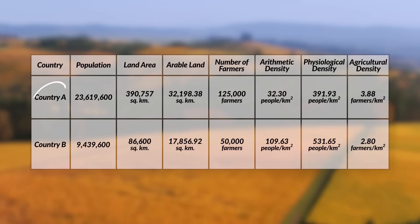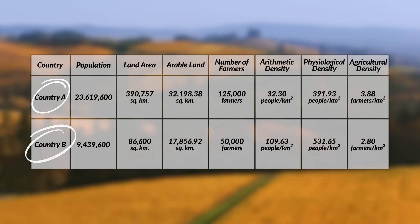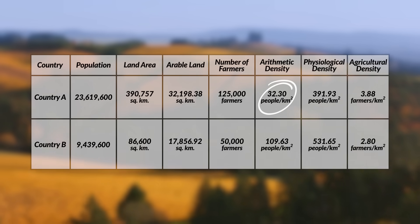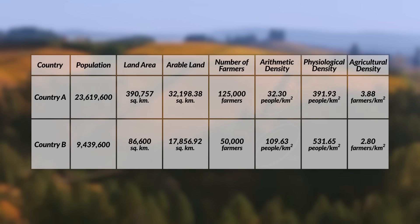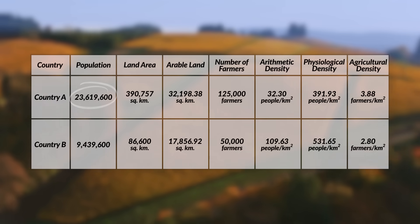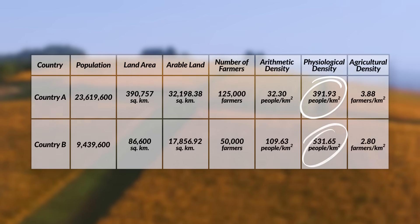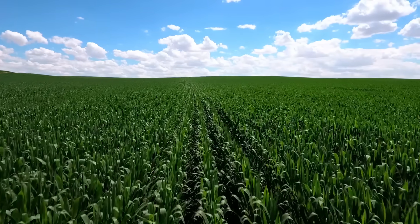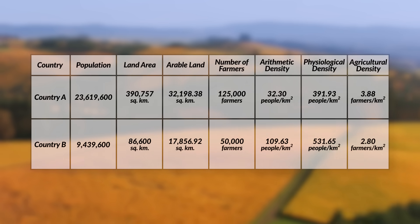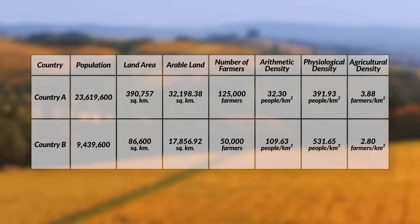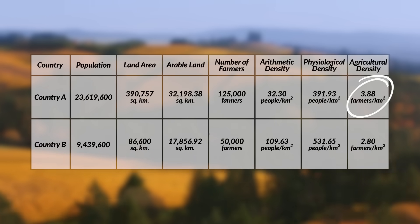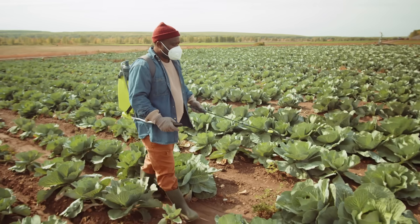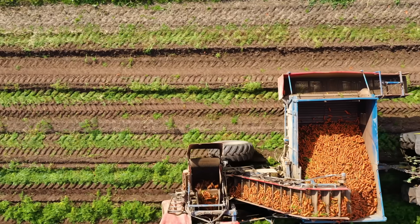Let's compare two countries. Country A has a lower arithmetic density of 32.3, while Country B's arithmetic density is 109.63. Country A actually has a larger population, but its physiological density is lower than Country B's, telling us Country A has more arable land and an easier time feeding its population. However, Country A is less efficient agriculturally — its agricultural density is 3.88, while Country B's is 2.80 — showing Country B uses slightly more efficient agricultural practices or more technology. This means Country B needs fewer people working in agriculture, freeing them to work in other industries and leading to more economic growth.